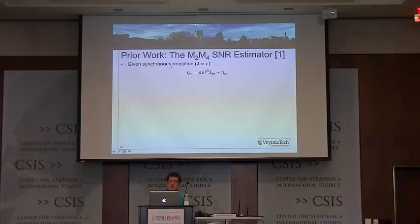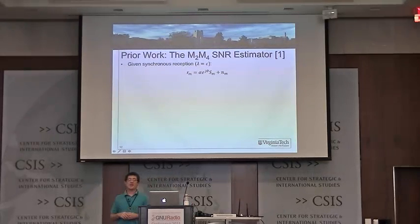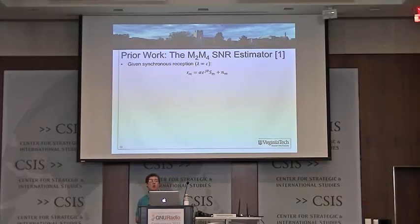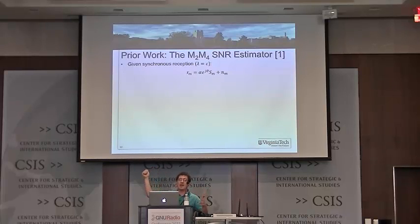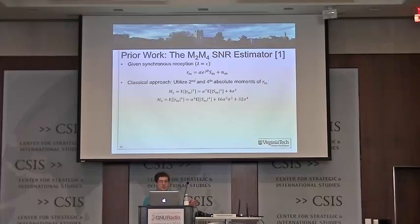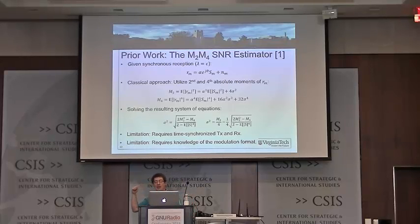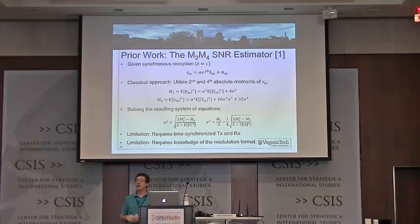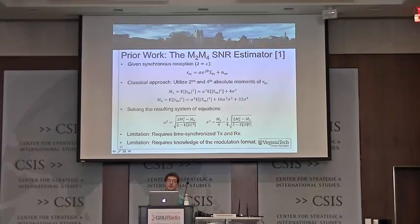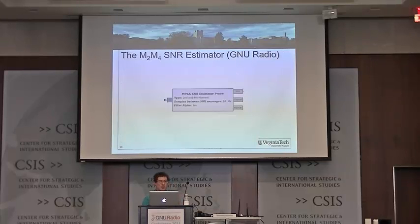There's something called the M2-M4 SNR estimator, which uses the second and fourth order moments to estimate the SNR of PSK and QAM signals. The key limitation is that it assumes you're synchronized. Given received symbols with gain, phase shift, and noise, we take the second and fourth absolute moments and derive the amplitude and noise variance — taking one over the other gives a function of SNR. But it requires time synchronization and knowledge of the modulation format, since we must know the fourth absolute moment of the symbols.